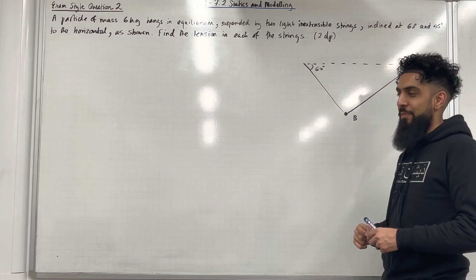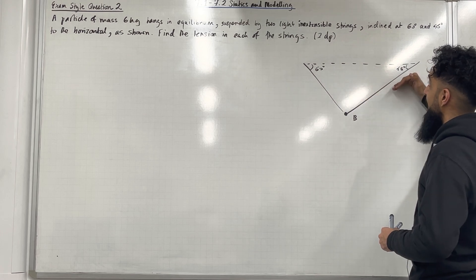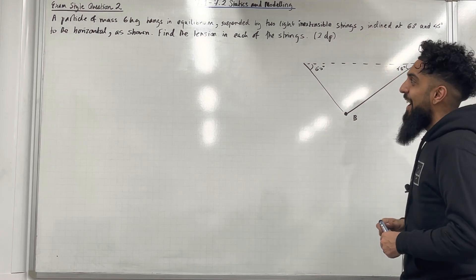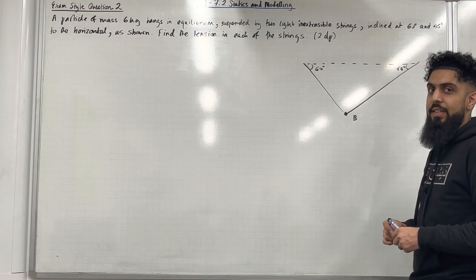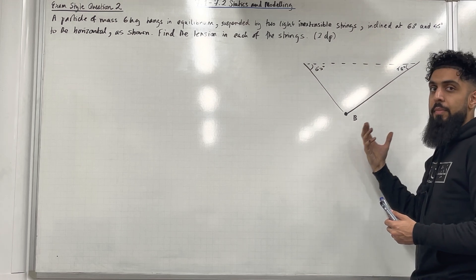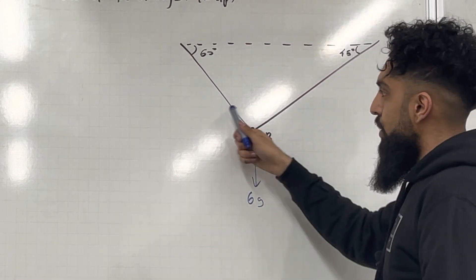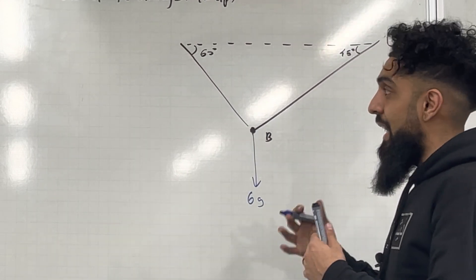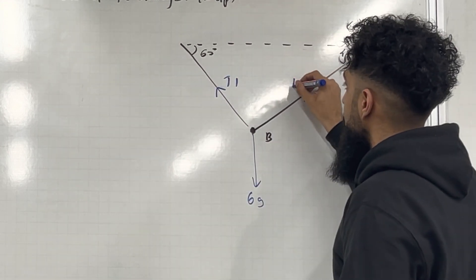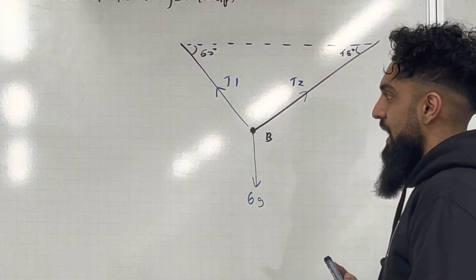Here is exam style question 2. A particle of mass 6 kg hangs in equilibrium suspended by two light and extensible strings inclined at 60° and 45° to the horizontal, as shown. Find the tension in each of the strings to two decimal places. I'm going to start by labelling all the forces acting on particle B. We have the weight 6g acting vertically downwards. These two strings are different, hence the tension will be different in each string — we can call them T1 and T2. For each tension force, we can form component forces by constructing a right-angle triangle.